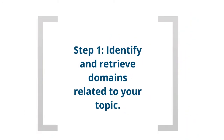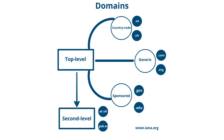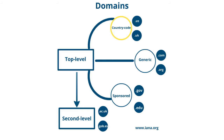Domains are hierarchies of the internet organized in different levels. Top-level domains form the basic foundation of the public web and are arranged in three large chunks: country code such as .us or .uk, generic such as .com or .org, and sponsored such as .gov and .edu.